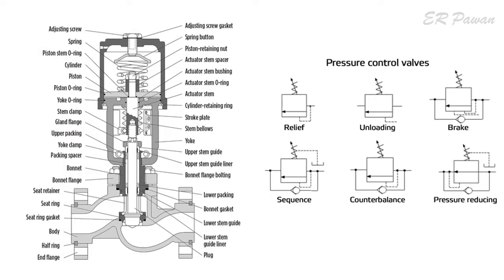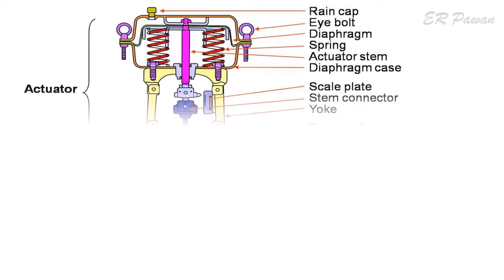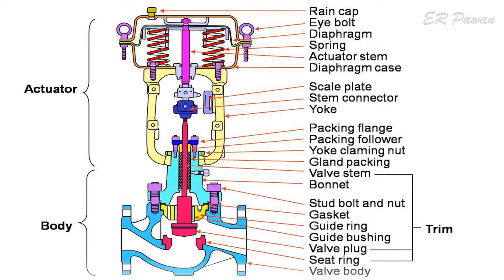There are different types of control valves used. The two basic types are rotary and linear sliding stem motion valves. Based on the type of control valve used, calibration is done.